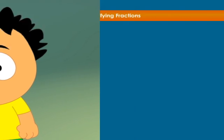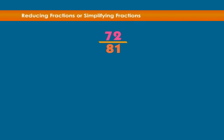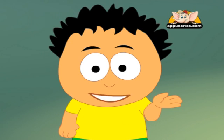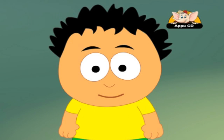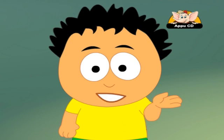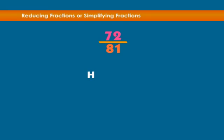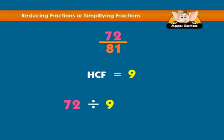Let's try one more. Reduce 72 over 81. Why don't you pause for a minute, work through the problem, and when you are done, continue to check your answer. The HCF of 72 and 81 is 9. So 72 divided by 9, over 81 divided by 9, is 8 ninths.